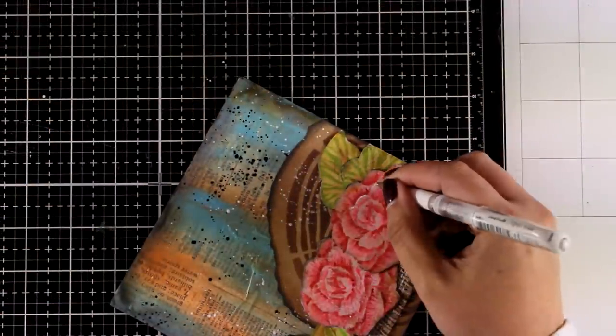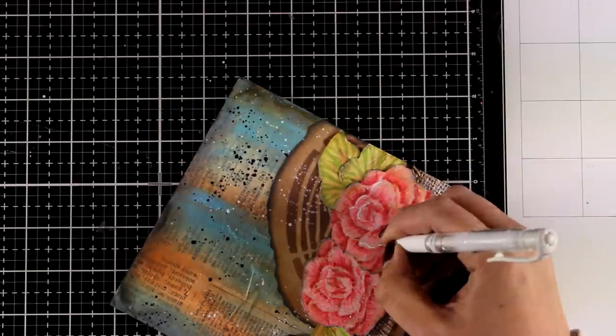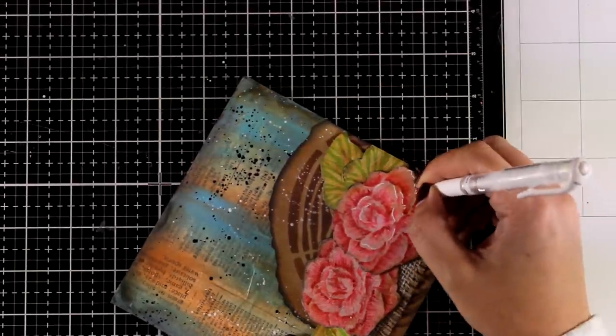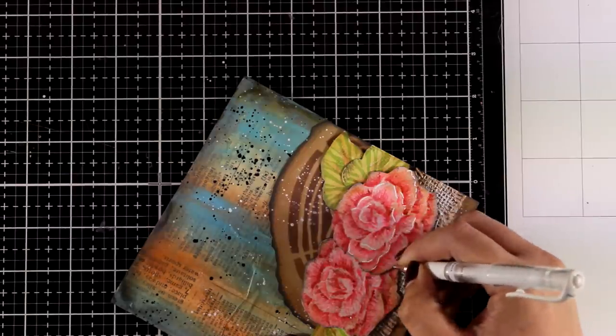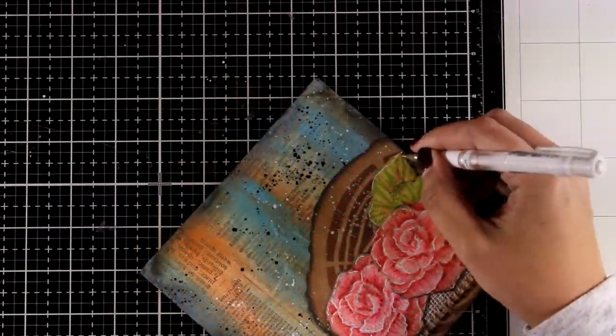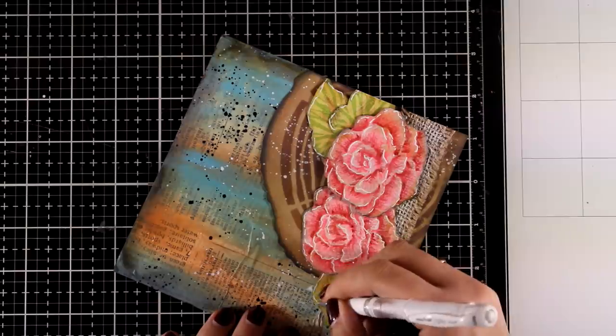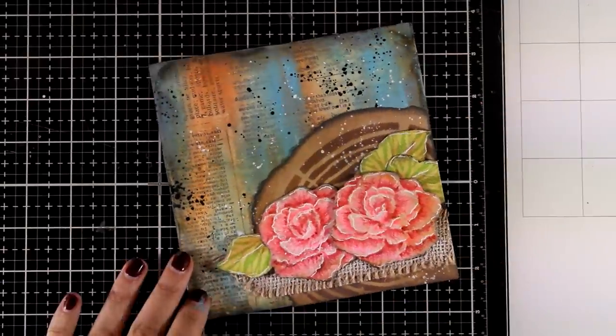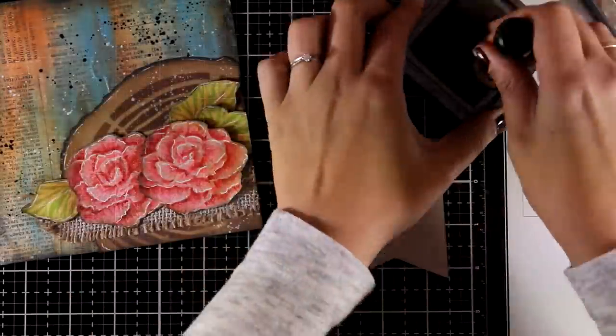And now for one of my favorite techniques, the highlighting. So here I am using my white gel pen and I am going all around the edges of the petals. Adding some lines here and there. These are going to bring the flowers even more to life. And I absolutely love that sketchy look that it gives. I am going to do that for both the flowers as well as for the leaves.